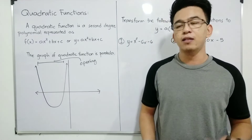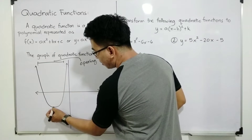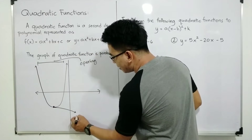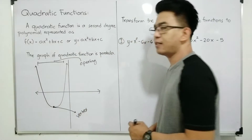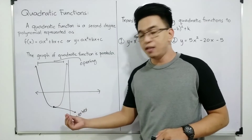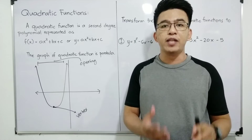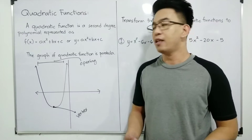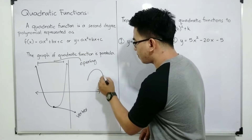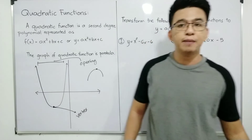Another thing that you need to understand about the parabola is this point — this point is considered as the vertex. If the parabola opens up, the vertex, or this point, is considered as the lowest point of the parabola. But if the parabola opens downward, this is the vertex, and it is considered as the highest point of the parabola.